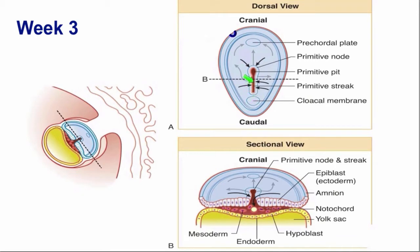Now we're going to see how we convert this into a three-layered embryo. In the midline of the epiblast — in the caudal half of the epiblast — there's going to develop a groove, and that groove is going to be called the primitive groove or the primitive streak. What's happening is that the cells of the epiblast from the left side and from the right side are migrating toward the midline. When those cells reach the midline, they're going to turn and go into that groove.